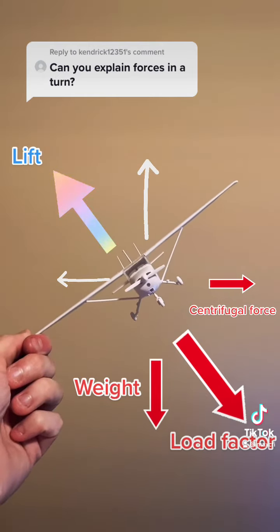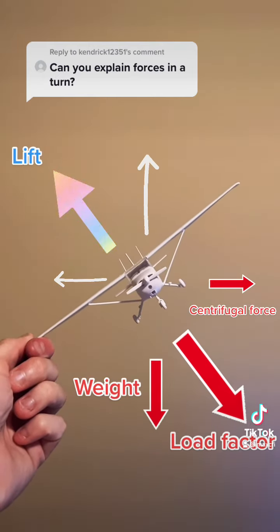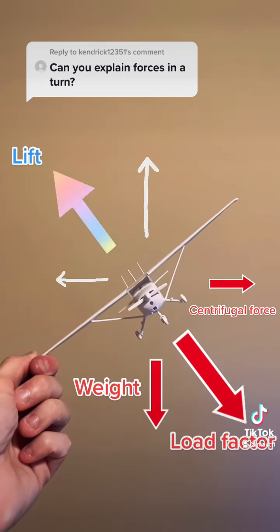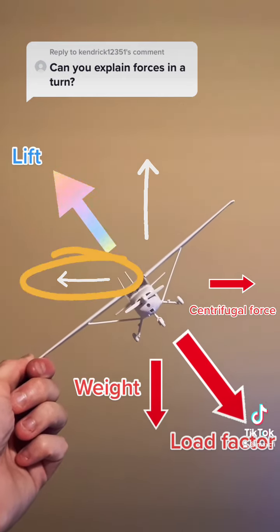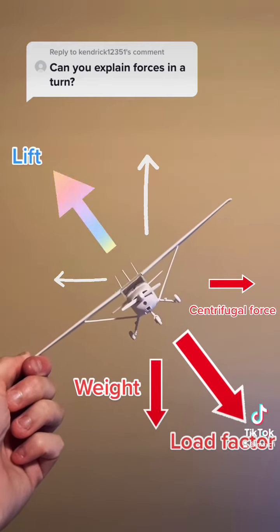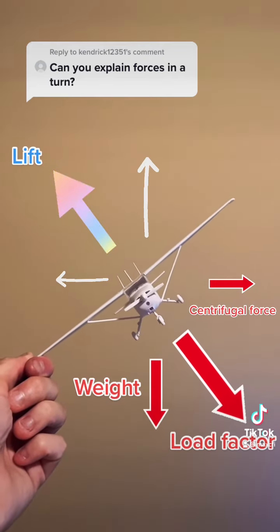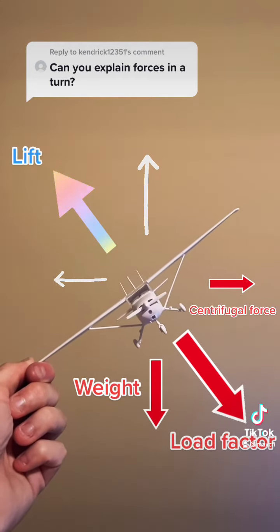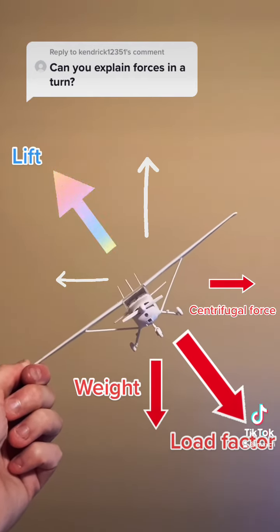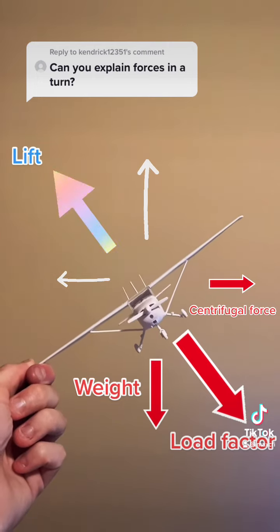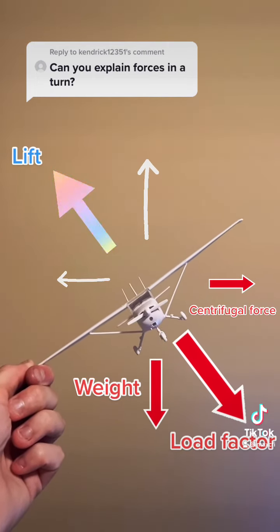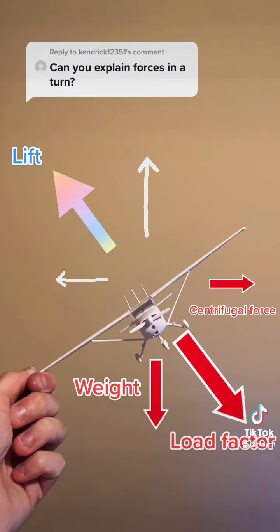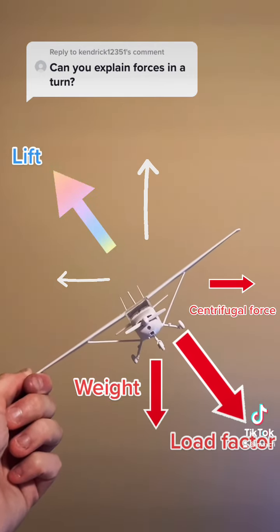This sum of the centrifugal force and weight is referred to as load factor, also called g-force. The steeper the bank, the greater the horizontal component of lift, so the faster the turn, and the more centrifugal force and thus load factor. The steeper the bank, the greater the load factor. In a 60 degree bank, the centrifugal force is large enough that the load factor is now twice the weight of the airplane. This airplane can be said to be experiencing a g-force of two g's.